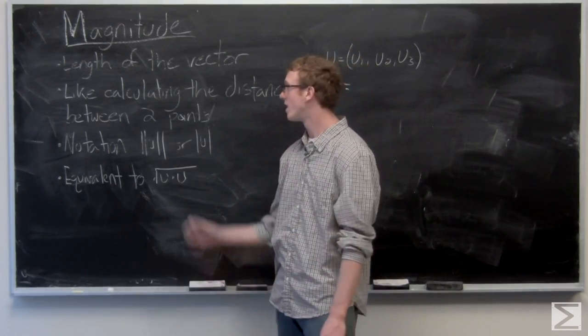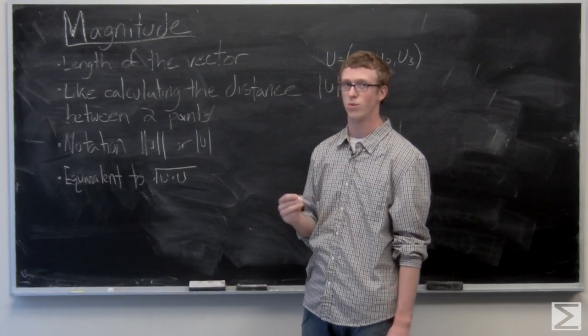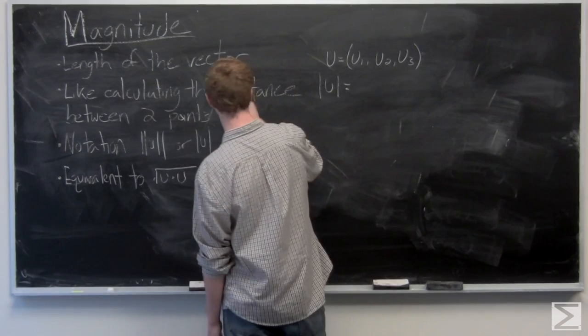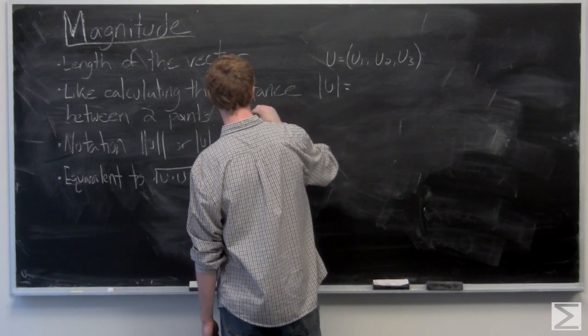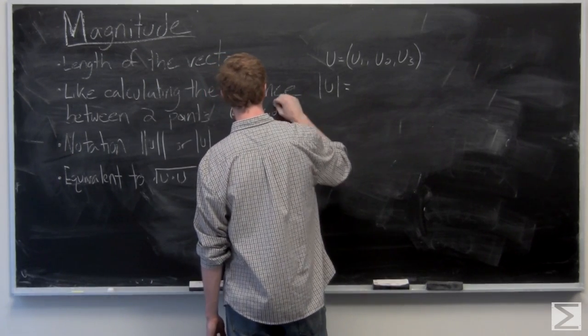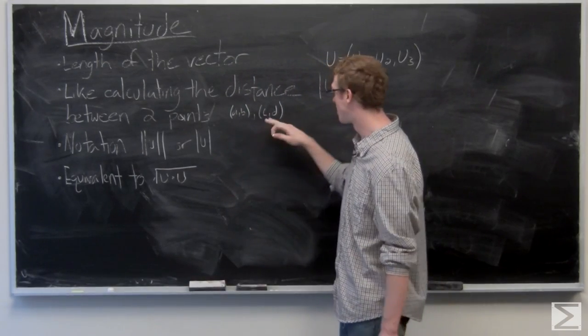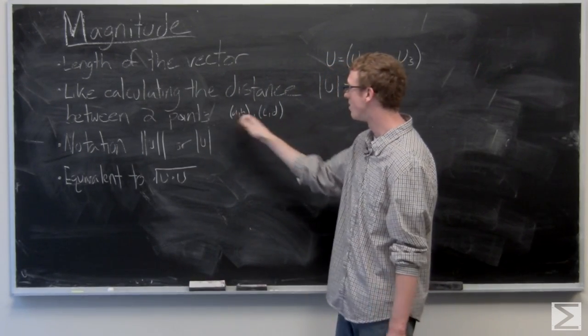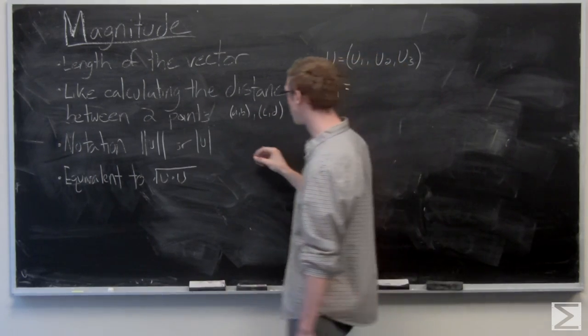It's really easy to calculate. It's like calculating the distance between two points, which you know points a, b, and c, d. If you want the distance from c, d to a, b, it's just the square root of c minus a squared plus d minus b squared.